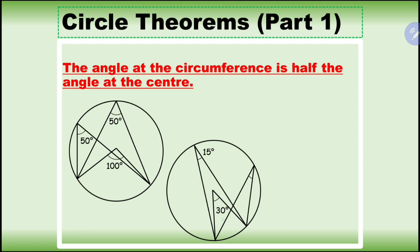Again, if the angle at the center is 30, and a new angle is drawn from the same points, that angle is going to be half the angle at the center, which makes it 15 degrees.